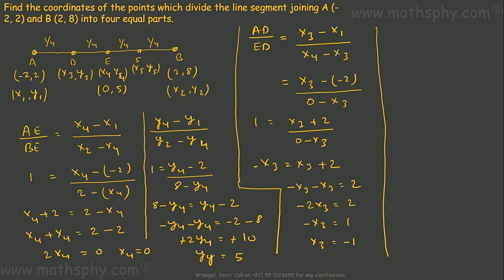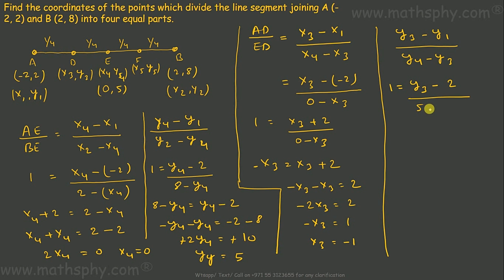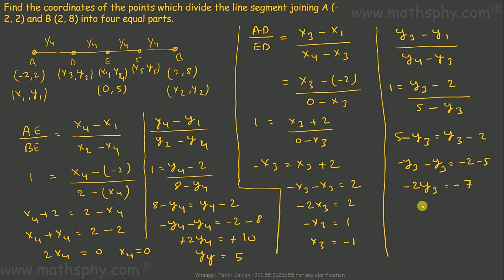Same way, let's find Y3. AD over ED equals (Y3 minus Y1) over (Y4 minus Y3). With Y1 equals 2 and Y4 equals 5: 5 minus Y3 equals Y3 minus 2, so minus 2Y3 equals minus 7, giving Y3 equals 7 over 2. So point D is at coordinates (negative 1, 7/2).